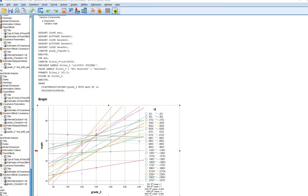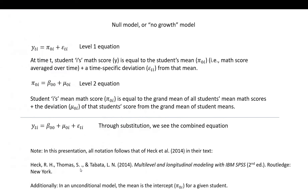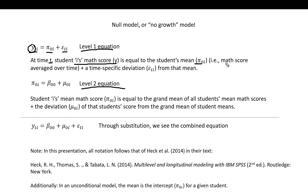Now we're going to run an initial model called a null model or no-growth model. We have two equations to represent our data. The level 1 equation is: y_ti = π_0i + ε_ti. This says that at time t, student i's math score equals the student's mean — the math score averaged over time — plus a time-specific deviation from that mean, which is the residual.